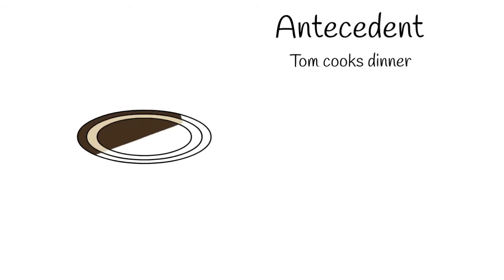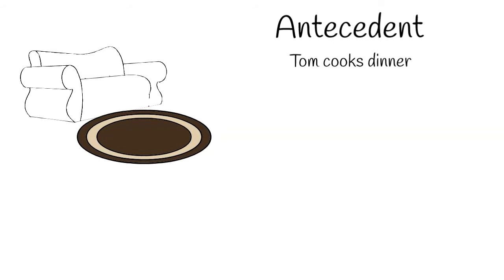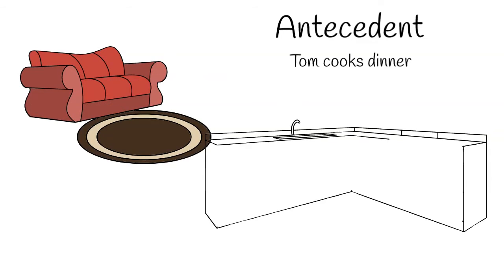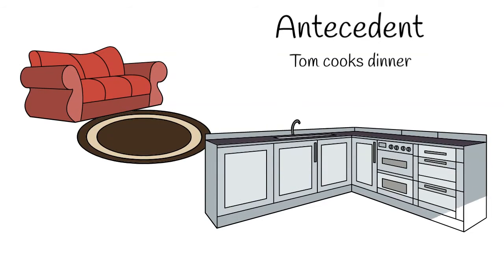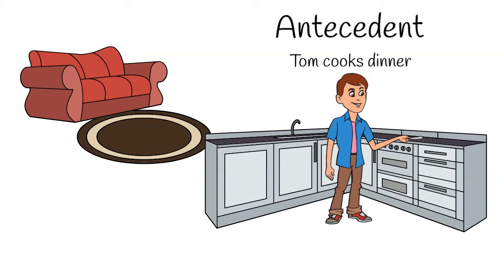The first opportunity for Tom to collect ABC data occurred one night when Tom was making dinner. Ethan was in the other room watching TV, so Tom wasn't sure what happened. Rather than write down that he wasn't watching Ethan, he decided maybe the antecedent was him making dinner.